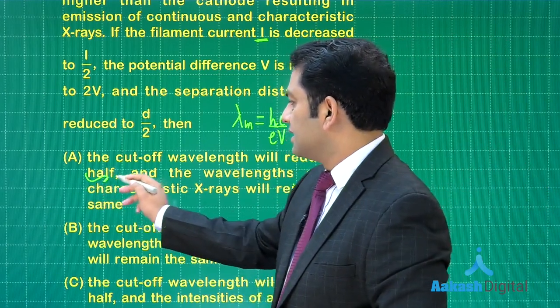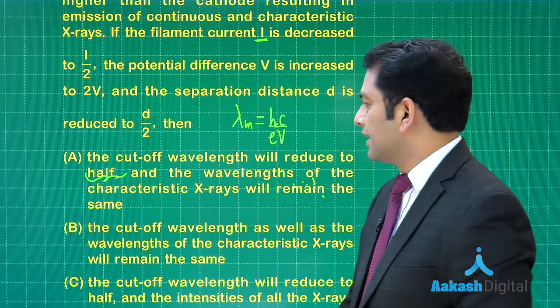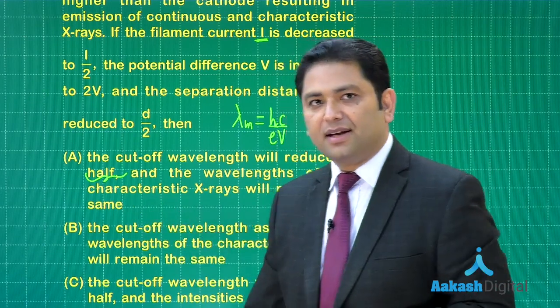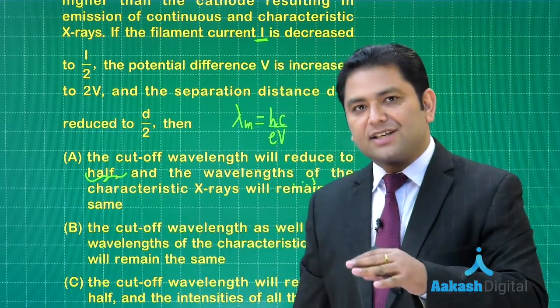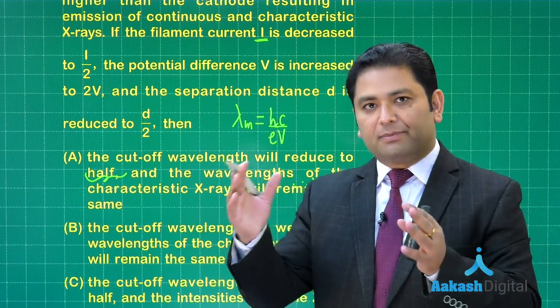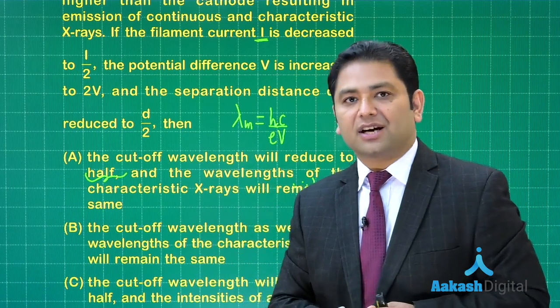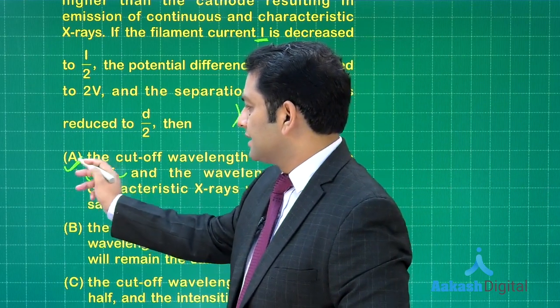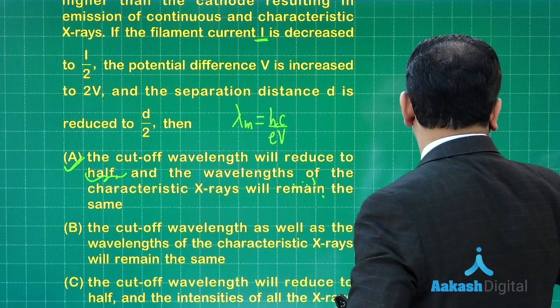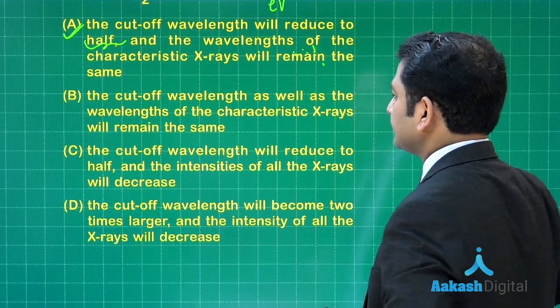The wavelength of characteristic x-ray will remain the same, and that's correct because characteristic x-ray has no business with accelerating potential—it depends on the energy gap of the target material. So option A is perfectly correct, and if A is correct, B would be incorrect.